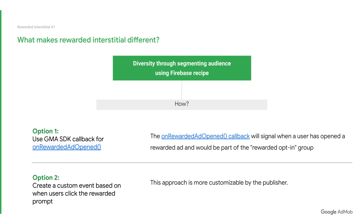Users who have not triggered this callback will remain in the no opt-in group. Option two: create a custom event based on when users click the rewarded prompt. You can segment your users based on who has and has not triggered the event. This approach is more customizable by the publisher. Both options allow you to show traditional rewarded ads to users likely to engage with them, and show rewarded interstitials to users who may not be engaging with opt-in rewarded ads. For more information on segmenting and testing this group, check out our Firebase video series in the description box below.